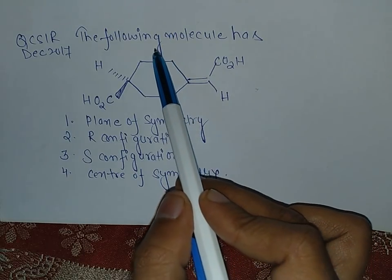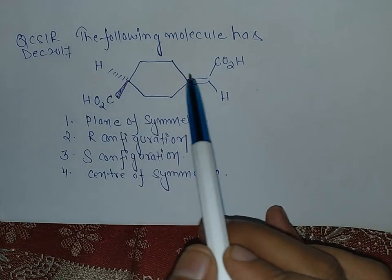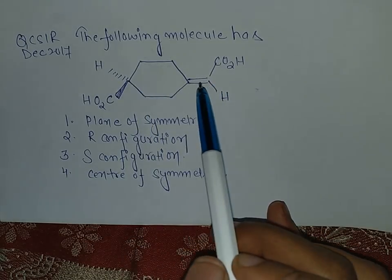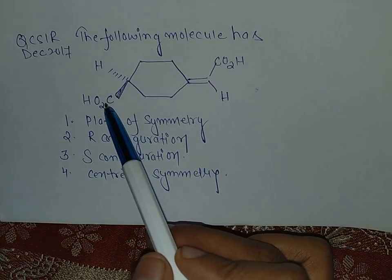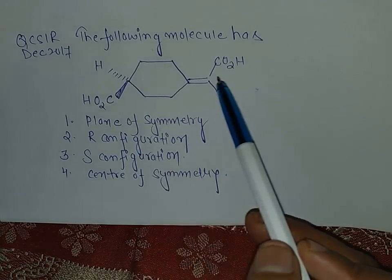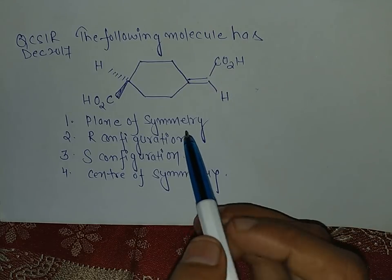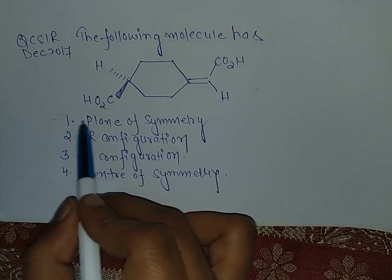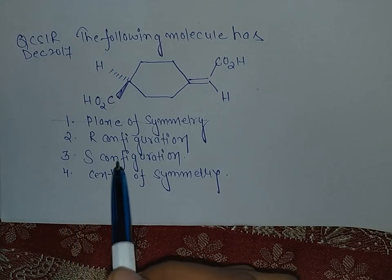The same goes for this plane. If we pass this plane then these will not reflect each other because this CO2H group is above the plane and this is on the plane, so plane of symmetry is not the answer.